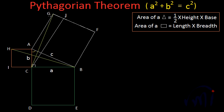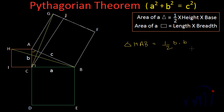The area of triangle HAB equals one-half base times height. Taking HA as the base, the base is B. The height of this triangle is also equal to B, since this triangle lies between two parallel lines HA and IB, and the distance between these parallel lines equals B. So the area is one-half times B times B, which is one-half B squared — that is half the area of the square with side B.